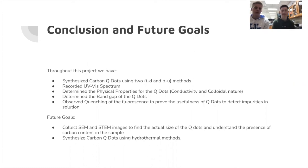For our future goals, currently we do know the quantum dots exist based on the experiments we've conducted, but we want to take it a step further and see the actual size of the quantum dots themselves in nanometers. We can use SCM or a STEM image at the University of Kentucky with an electron microscope. It's a very expensive machine, so we hope to go there in the upcoming weeks to get an actual image of the quantum dots. We also hope to synthesize our carbon quantum dots using hydrothermal methods as well in the future.